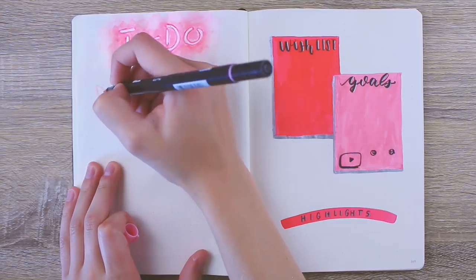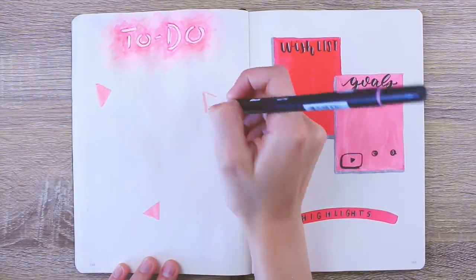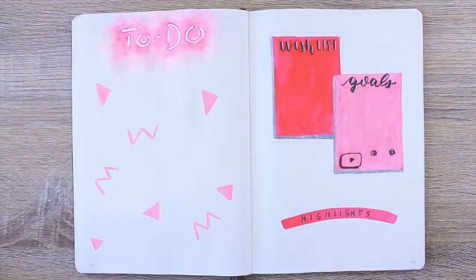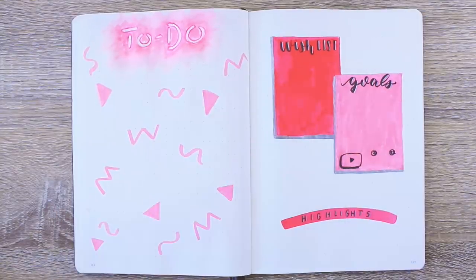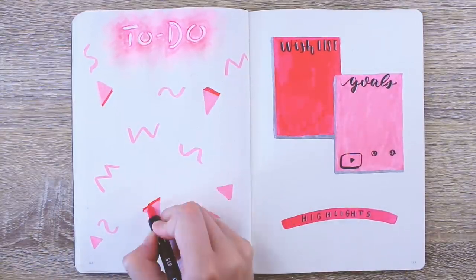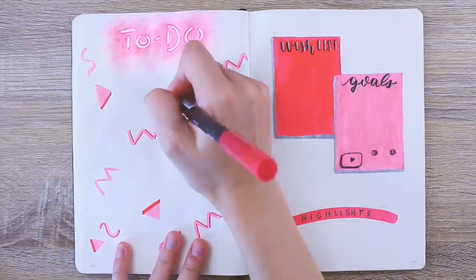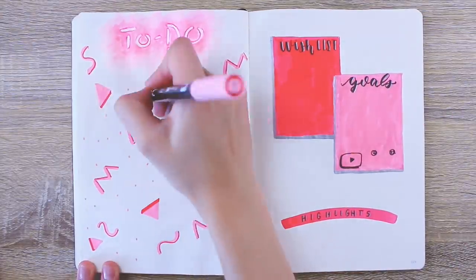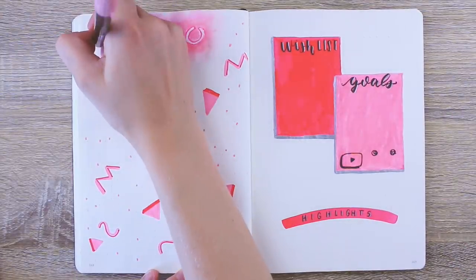And then to fill in the rest of the space on that page, I just did some kind of retro looking doodles. I use these to-do list pages to put all of my sticky note lists that I make, grocery lists, to-do lists. So it doesn't really matter what I put on here because I'm just going to kind of be covering it up anyways.